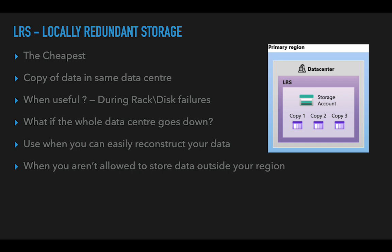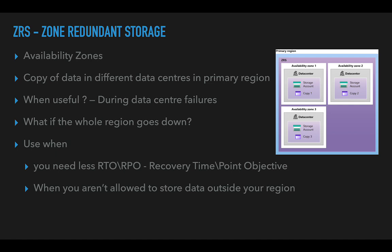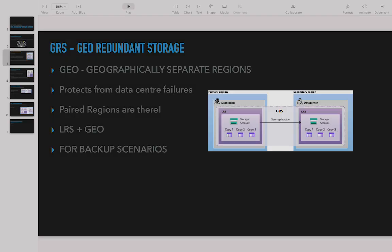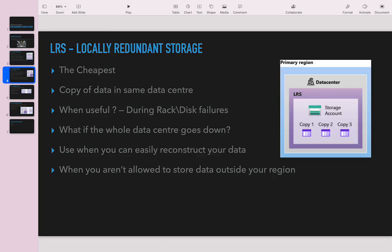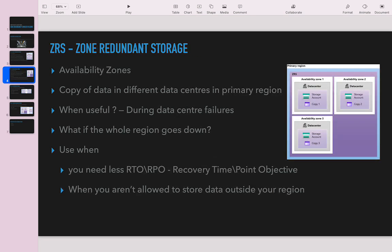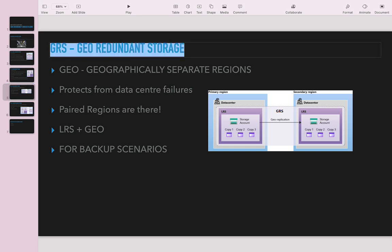To summarize: LRS stores three copies in one data center; ZRS stores one copy in each of three data centers within the same region. LRS and ZRS are both within the same region. What if something happens to the complete region? If South India has a critical issue bringing down all availability zones, we need Geo Redundant Storage (GRS).